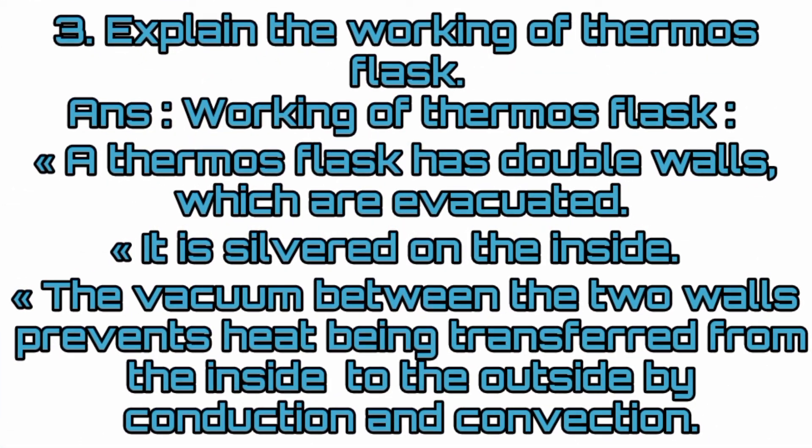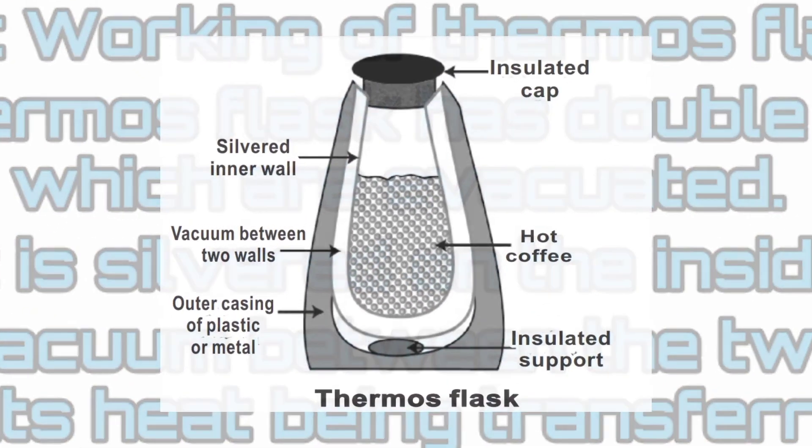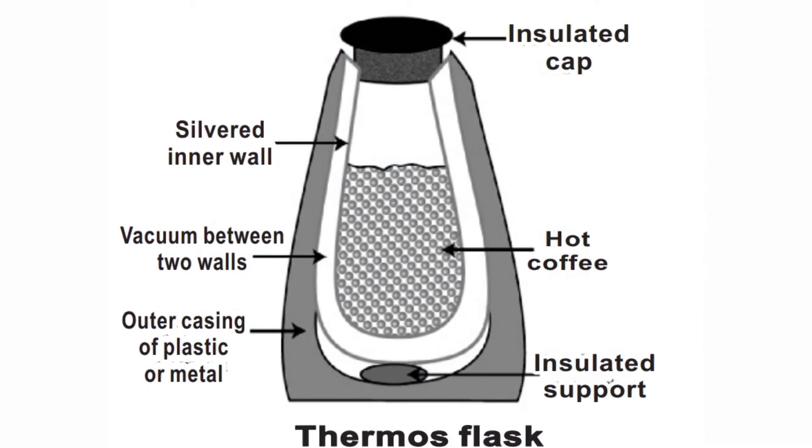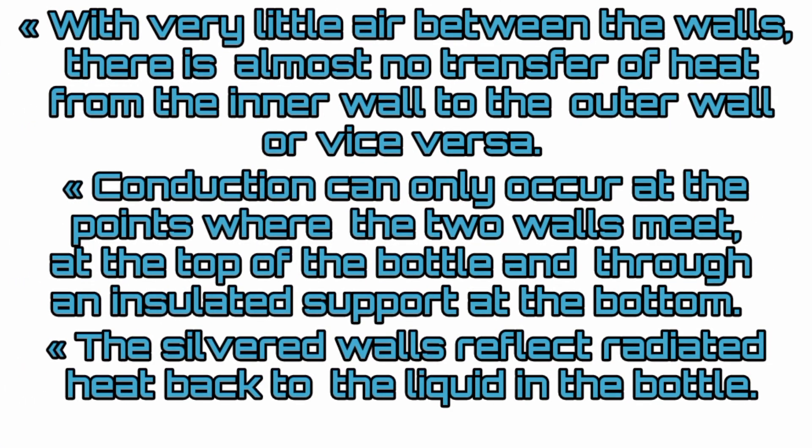Question 3: Explain the working of a thermos flask. A thermos flask has double walls which are evacuated and silvered on the inside. The vacuum between the two walls prevents heat being transferred from the inside to the outside by conduction and convection. With very little air between the walls, there is almost no transfer of heat from the inner wall to the outer wall or vice versa. Conduction can only occur at the points where the two walls meet at the top of the bottle and through an insulated support at the bottom. The silver walls reflect radiated heat back to the liquid in the bottle.